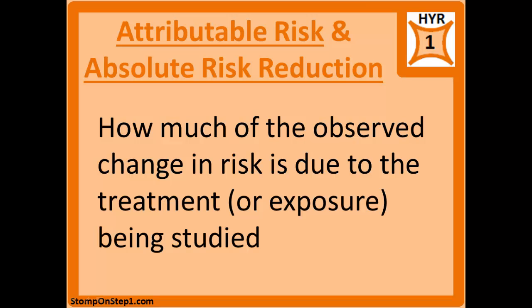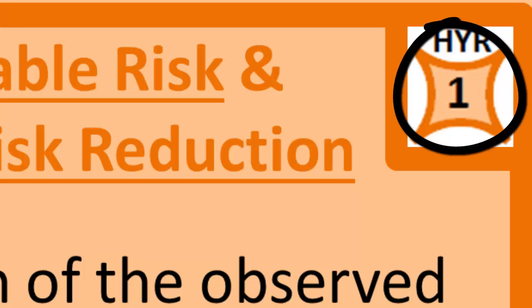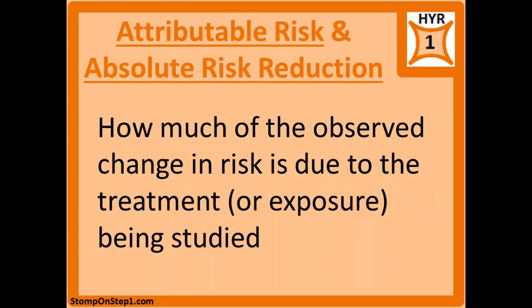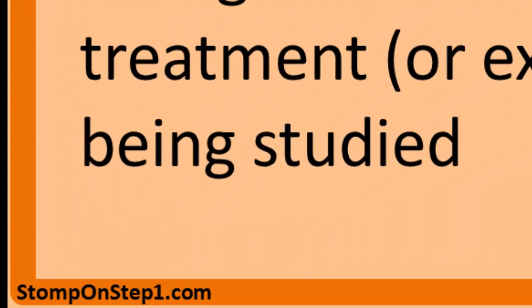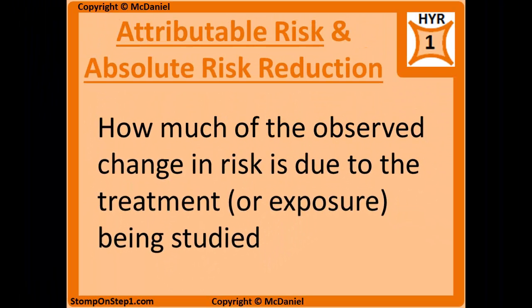You can see here in the top right corner that I give attributable risk and absolute risk reduction a high yield rating of 1. For those of you that don't know what that is, it's a rating scale from 0 to 10 giving you a rough estimate for how important each topic is for Step 1. If you'd like to learn more about that rating system you can head to my website at stomponstep1.com.